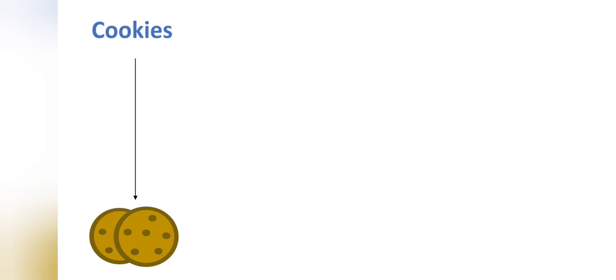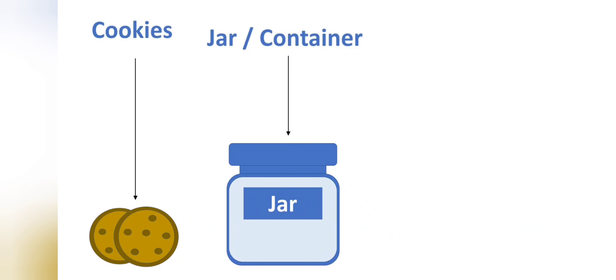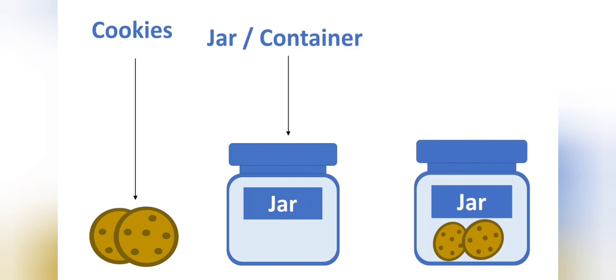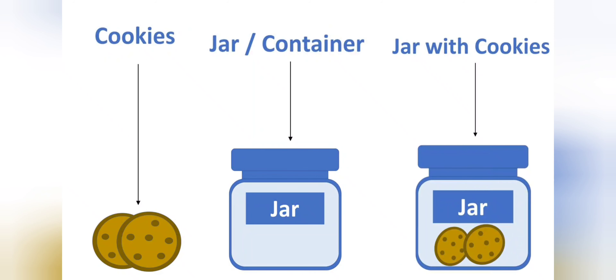I have the cookies and I want to store them, so for that I need a container. That's why I have taken a jar to store the cookies. In this way we can store cookies into the jar — the jar works as a container. Similarly, in Java programming, if we have to store a value or any data, we can store it into a variable.